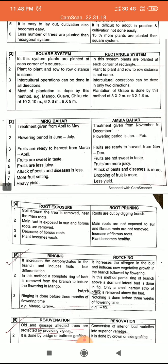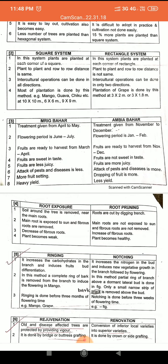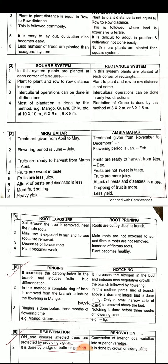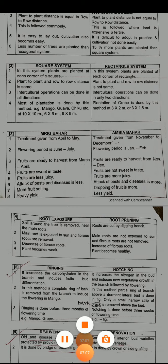Next difference: Mrig Bahar and Ambiya Bahar. There are 3 types of bahar treatment: Mrig Bahar, Ambiya Bahar, and Hasta Bahar. In Mrig Bahar, treatment is given from April to May. In Ambiya Bahar, treatment is given from November to December.